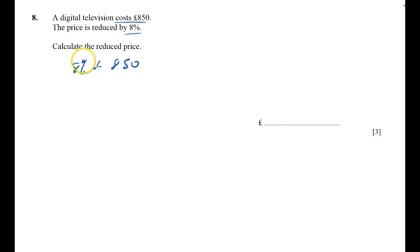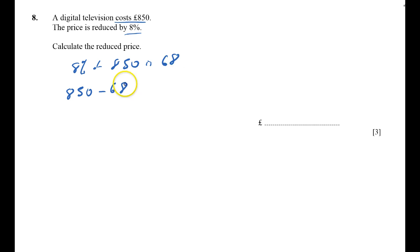850 is reduced by 8%. To calculate the reduced price: 8% of 850 is 68, and so the reduced price is 850 minus 68, which is 782.